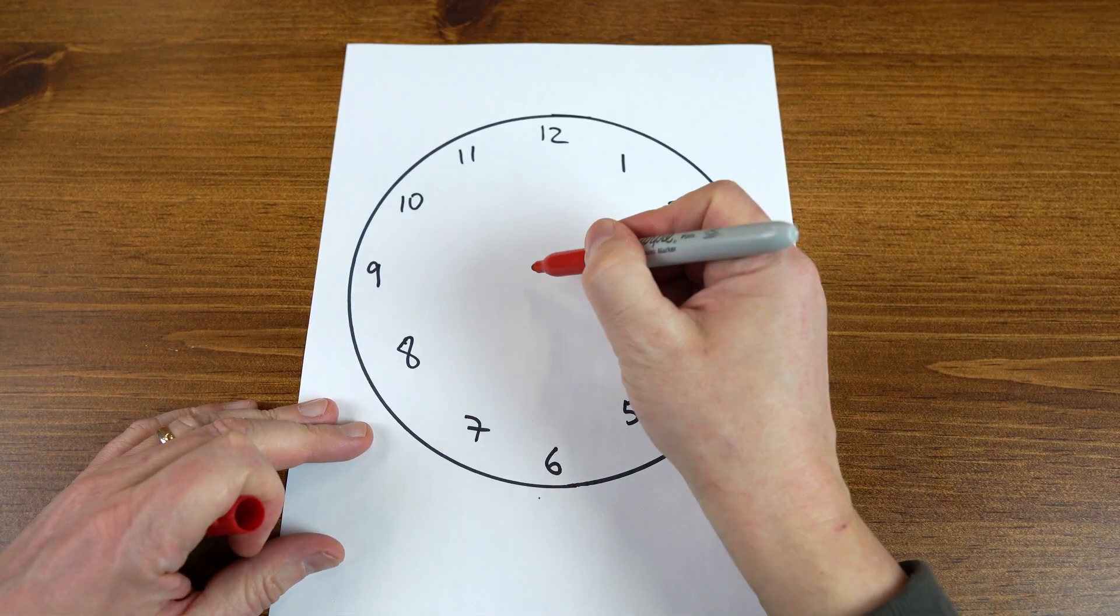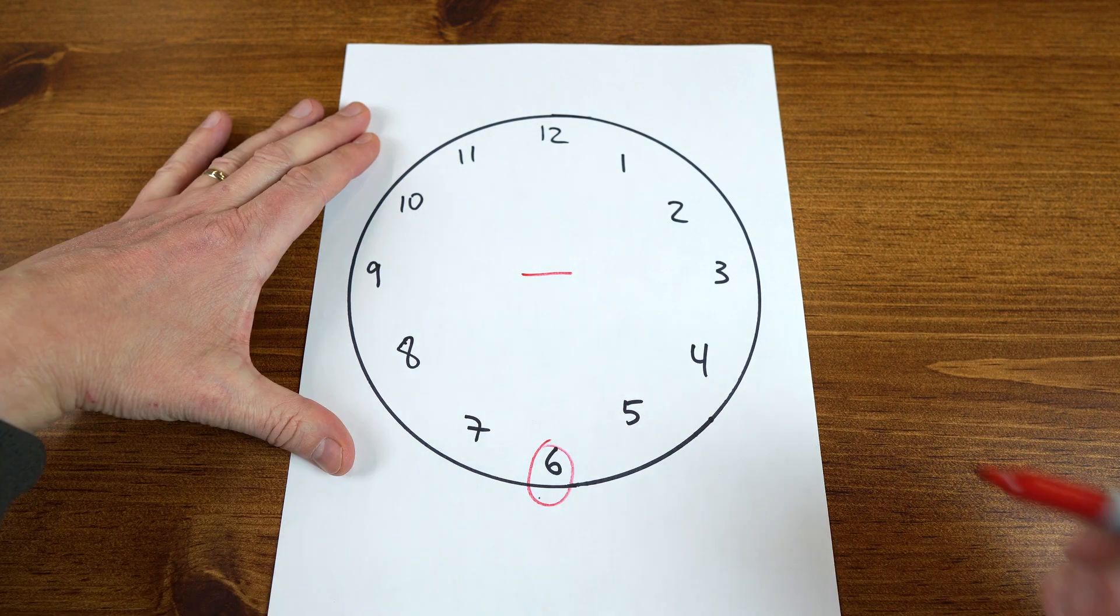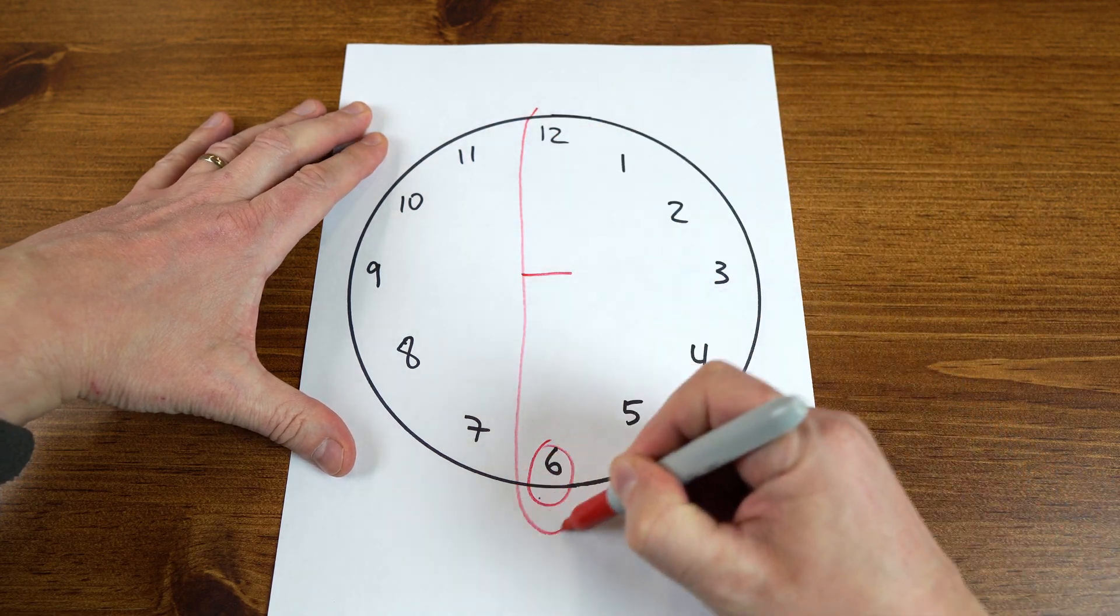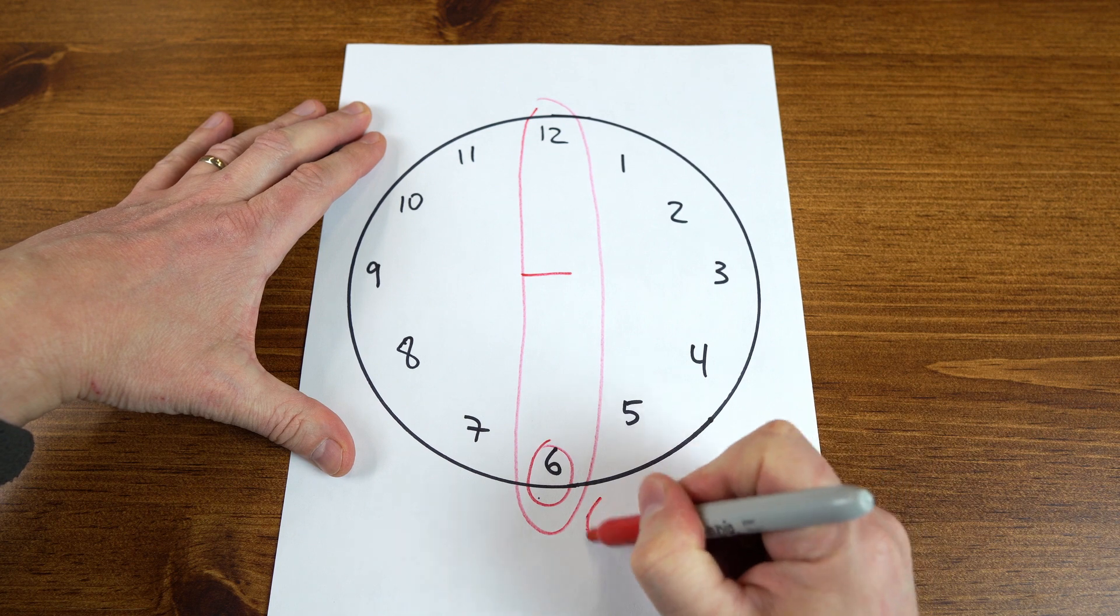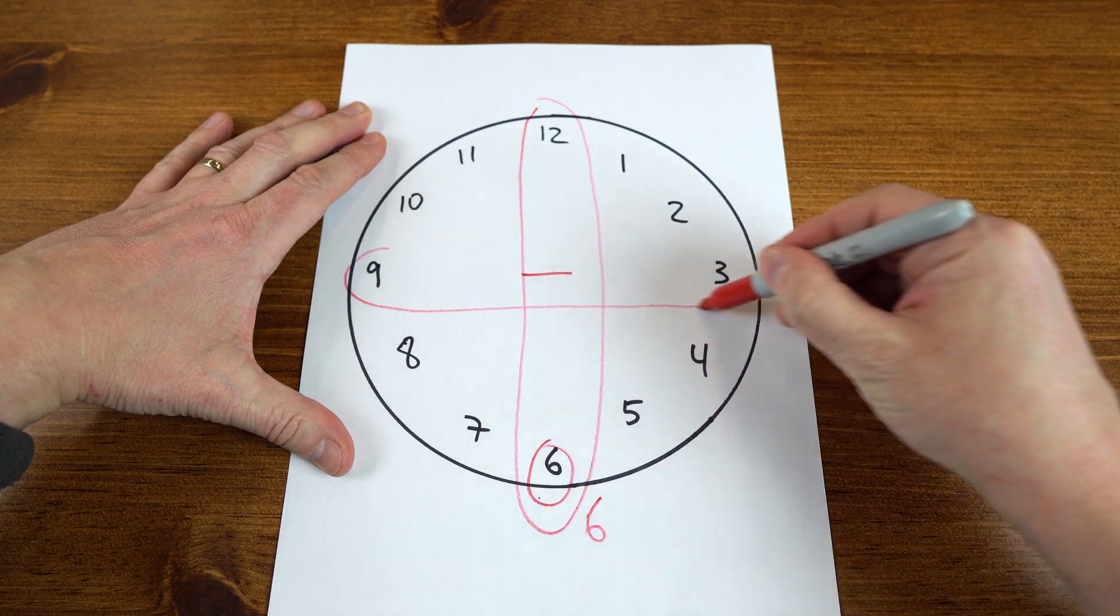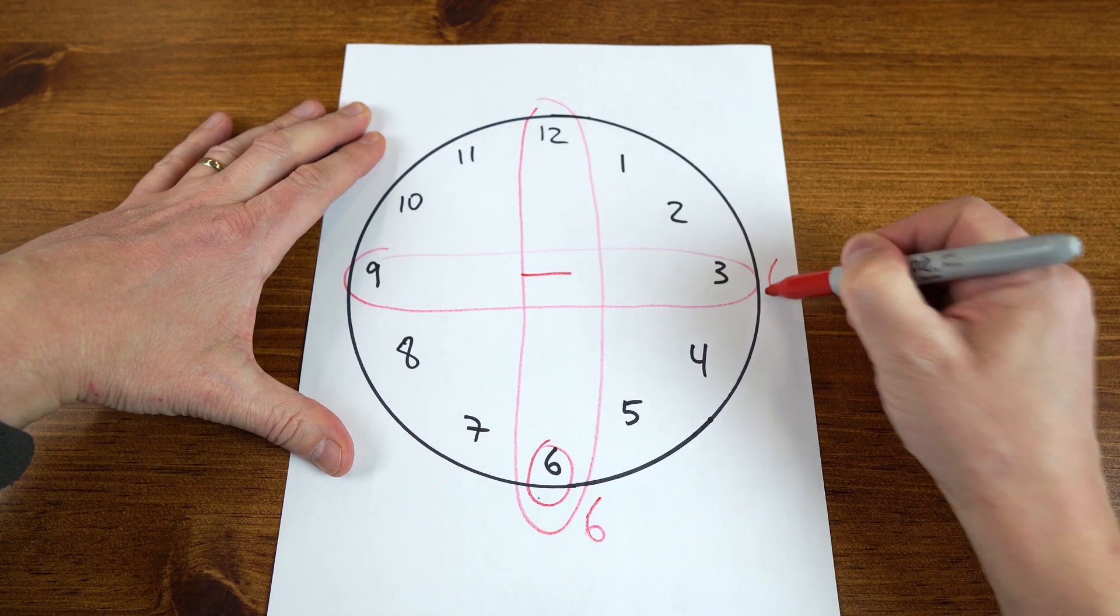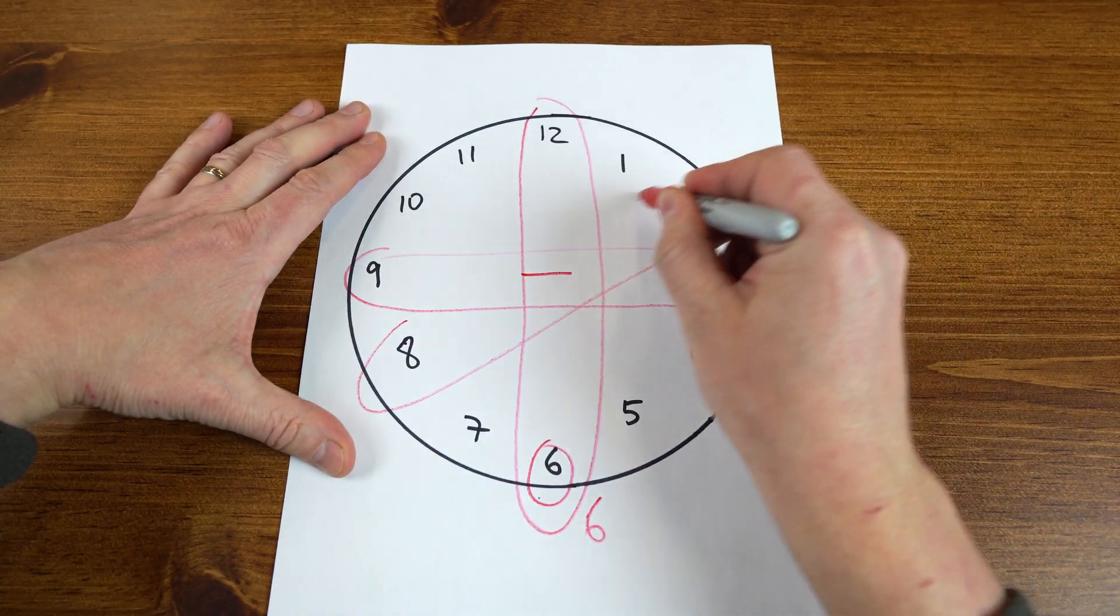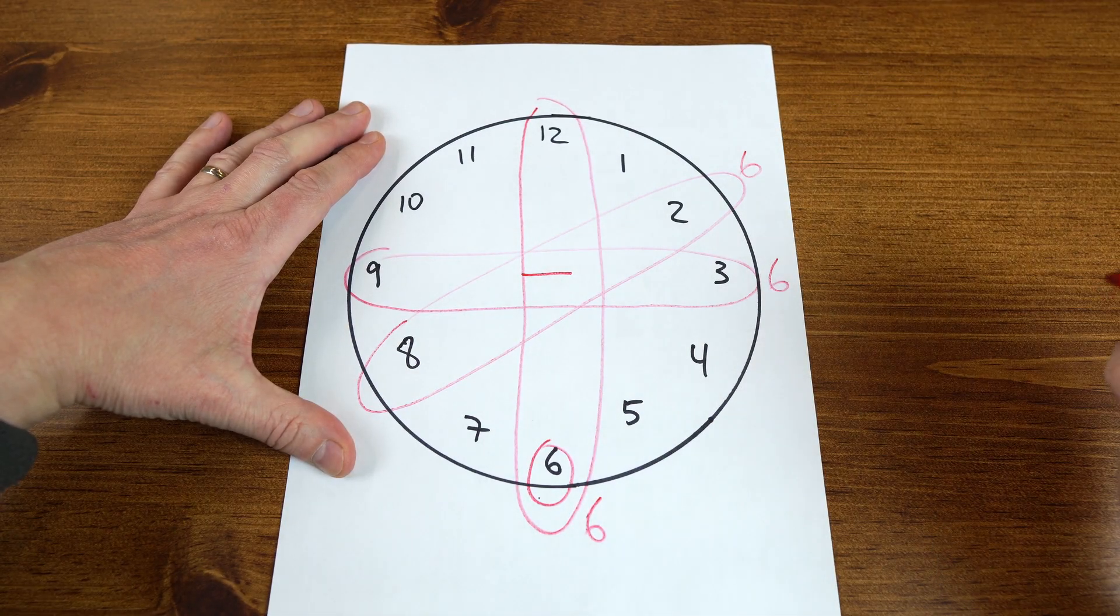This time I'm going to do subtraction and I'm going to make number 6. Check this out. 12 minus 6, it's going to be 6. 9 minus 3, it's going to be 6. 8 minus 2, it's going to be 6.